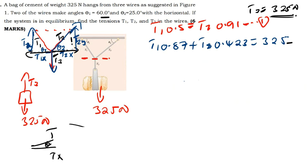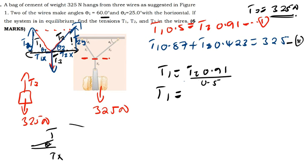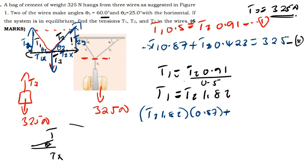Now I'll make T1 the subject of formula from Equation 1: T1 = T2 × 0.91 divided by 0.5, which gives T1 = T2 × 1.82. In Equation 2, I replace T1 with T2 × 1.82: (T2 × 1.82) × 0.87 + T2 × 0.423 = 325. I calculate 1.82 times 0.87, which gives 1.5834.